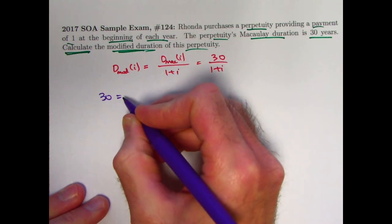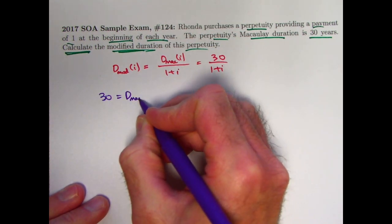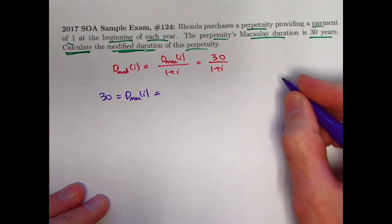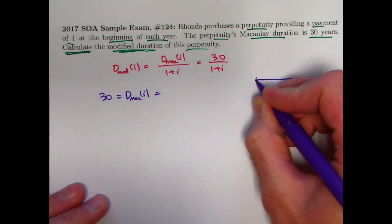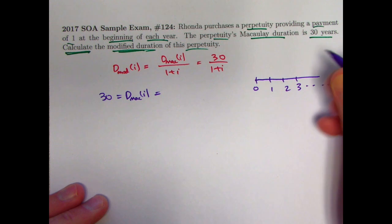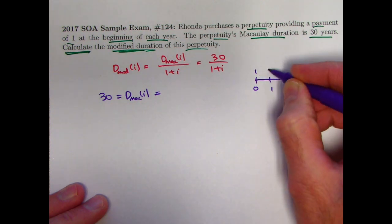And you need to go back to the definition of Macaulay duration. I've written it in previous videos involving summations, but let's just go ahead and think about a number line here. Here's our timeline. These payments of 1 starting at time 0 go on forever.